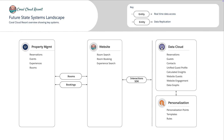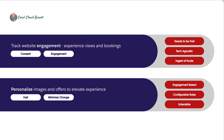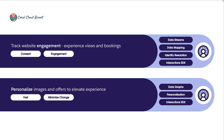Now we have the architecture documented. Let's go back and look at the two new goals that Coral Cloud Resorts have and map them to Data Cloud capabilities. The first goal was to track website engagement — to do that we can use data streams, data mapping, identity resolution, and the Web Interactions SDK to push information into Data Cloud. To personalize images and offers, we can use data graphs, personalization, and the Web Interactions SDK to fetch those dynamic assets from Salesforce Personalization to display them on the website.